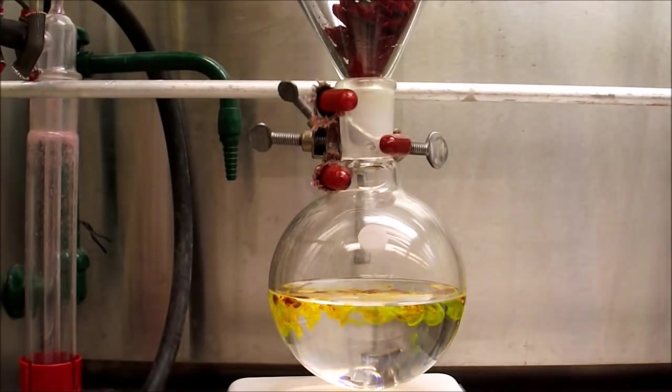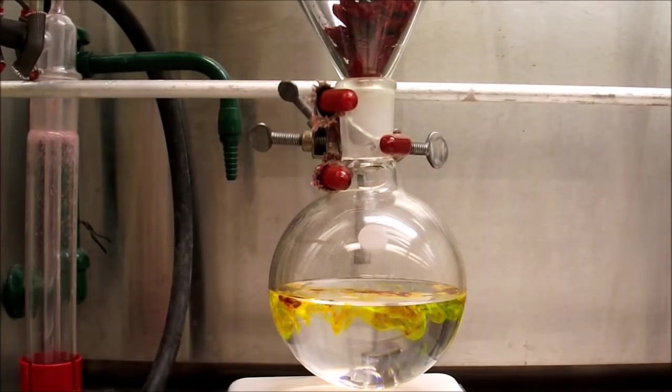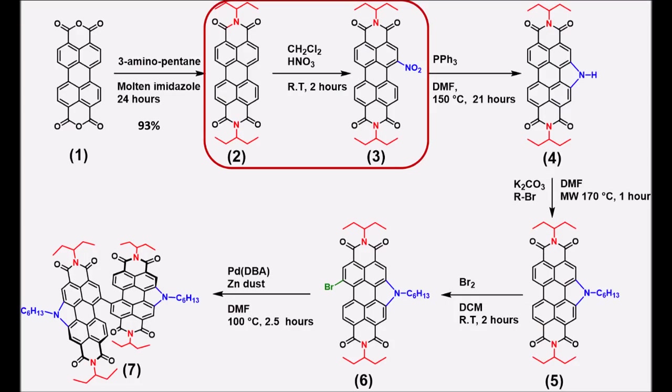Hello and welcome to Welch Lab Chemistry. Today we will be nitrating ethylpropyl perylene diamide to the corresponding mononitro derivative. For full synthetic details please see the paper linked in the video description.